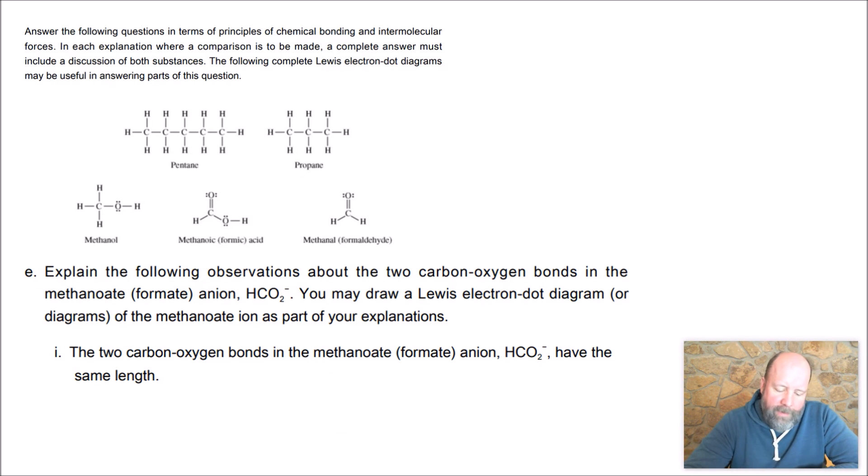So explain the following observations about the two carbon oxygen bonds in the methanoate, the formate anion. So the formate anion, here's formic acid. Formate is the conjugate, just like acetate was the conjugate of acetic acid. And so we can even draw that if we like. We've got a double bonded oxygen. We've got a hydrogen and we've got a single bonded oxygen with the minus one. And of course I need my extra electrons on my oxygen.